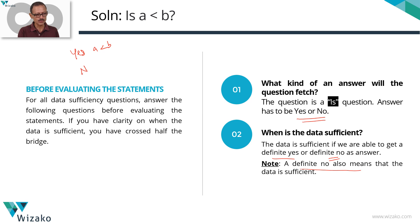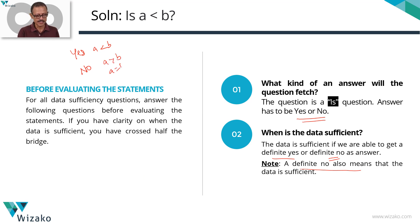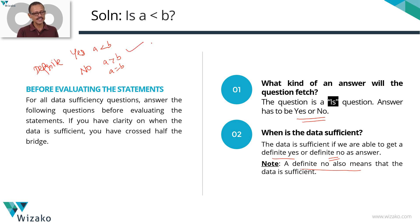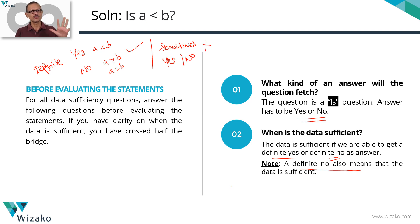A definite no also means the data is sufficient. A convincing no happens when a is greater than b — that's one instance. It can also happen when a is equal to b. In both instances, we'll get a no as an answer. A definite yes or a definite no means the data is sufficient. If we get an inconclusive answer — sometimes yes and sometimes no — then the data is not sufficient.